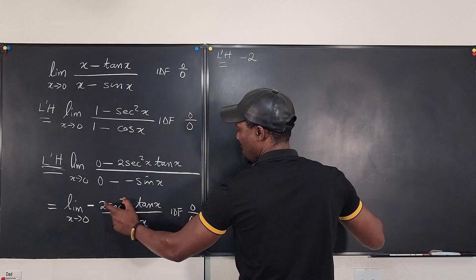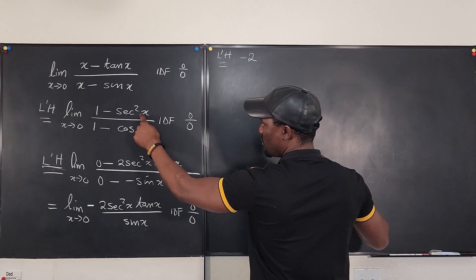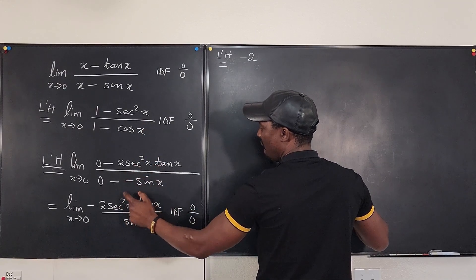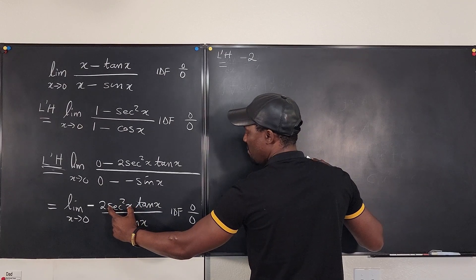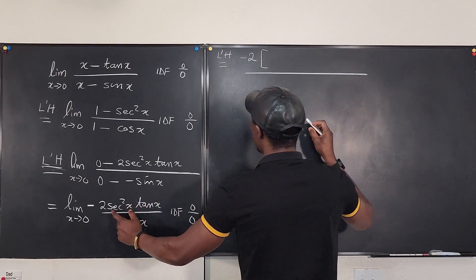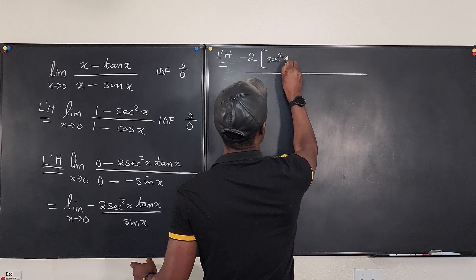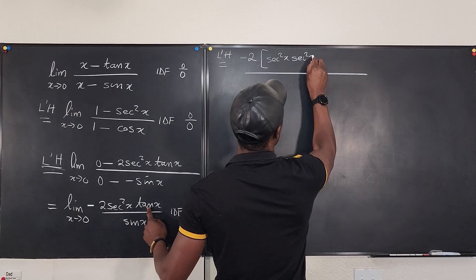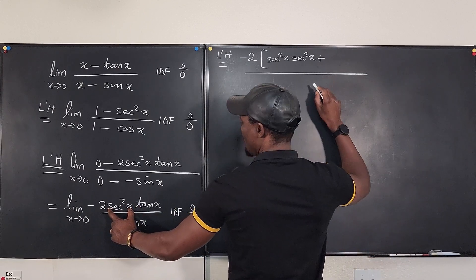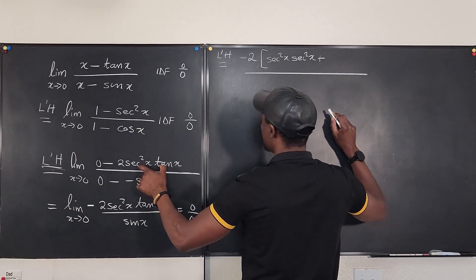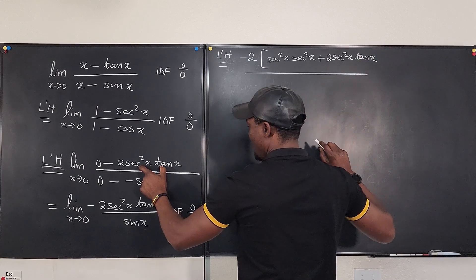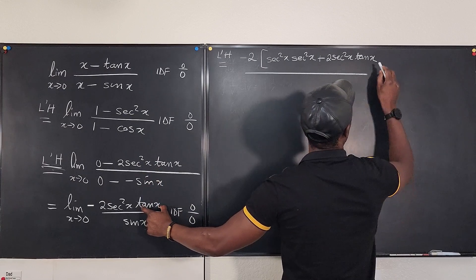Now the derivative of secant squared x, I think we did that before. The answer to secant squared x is 2 secant squared x tan x. So I don't have to redo this, but I have to apply the product rule for differentiation. So we're going to keep the first, differentiate the second. Wow, that's going to be a bit more complicated than I was expecting. So we keep the first, that's going to be secant squared x, differentiate the second, which is going to be secant squared x. Plus, differentiate the first, which means we're going to differentiate this, but the derivative of secant squared x is what we have here, which is going to be 2 secant squared x tan x. And then you keep the second, which is tan x.